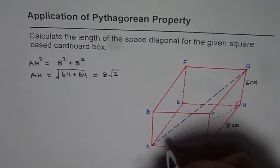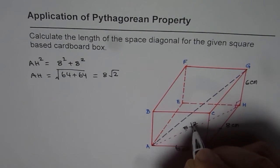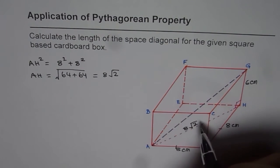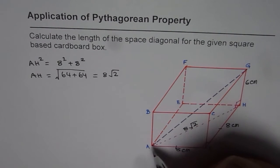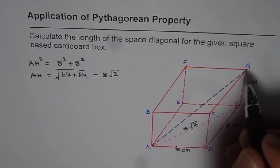Now we know AH is 8 square root 2. And we know the height GH of this triangle AGH. From this we can find AG.